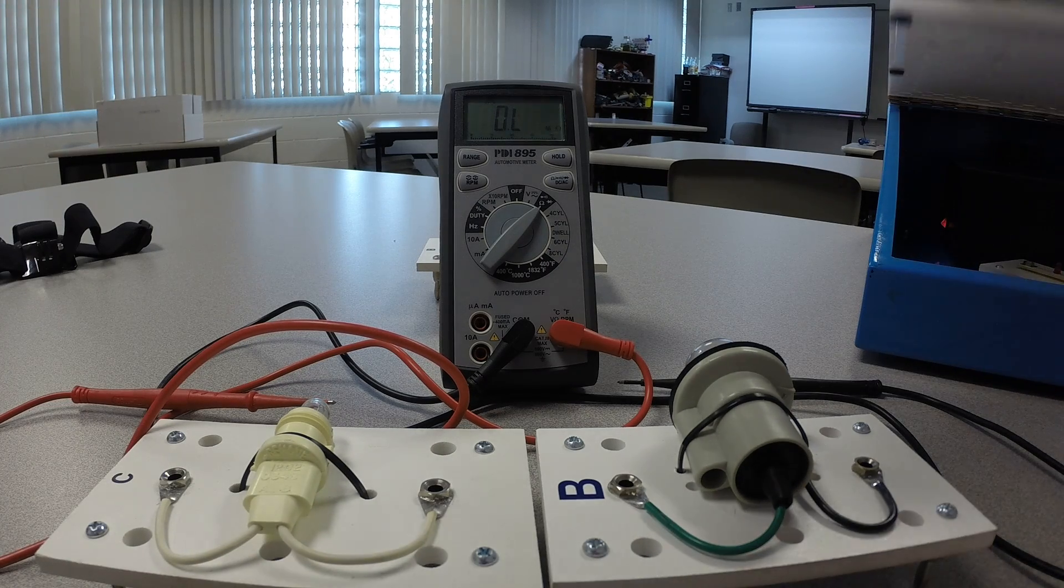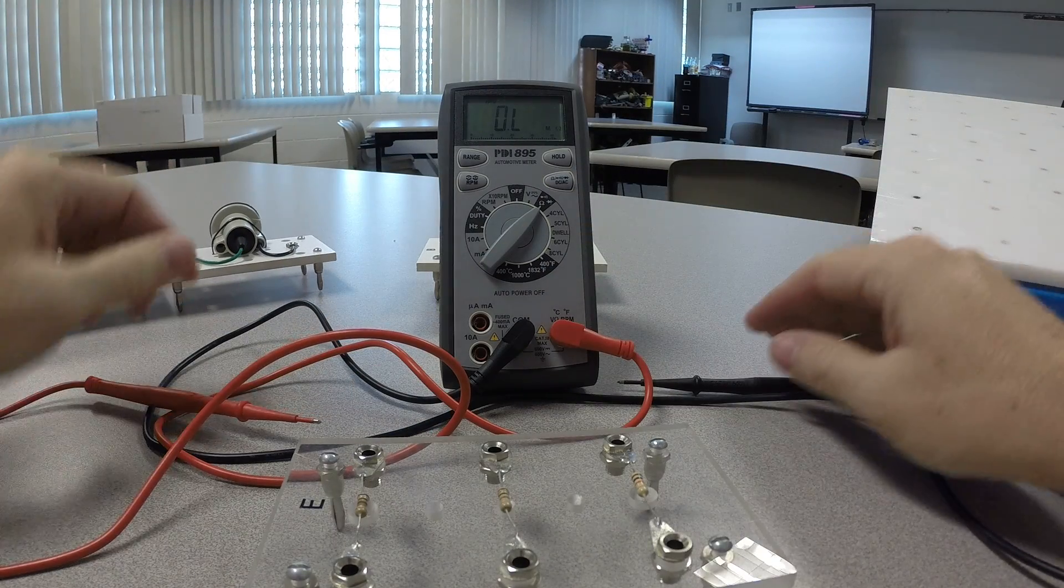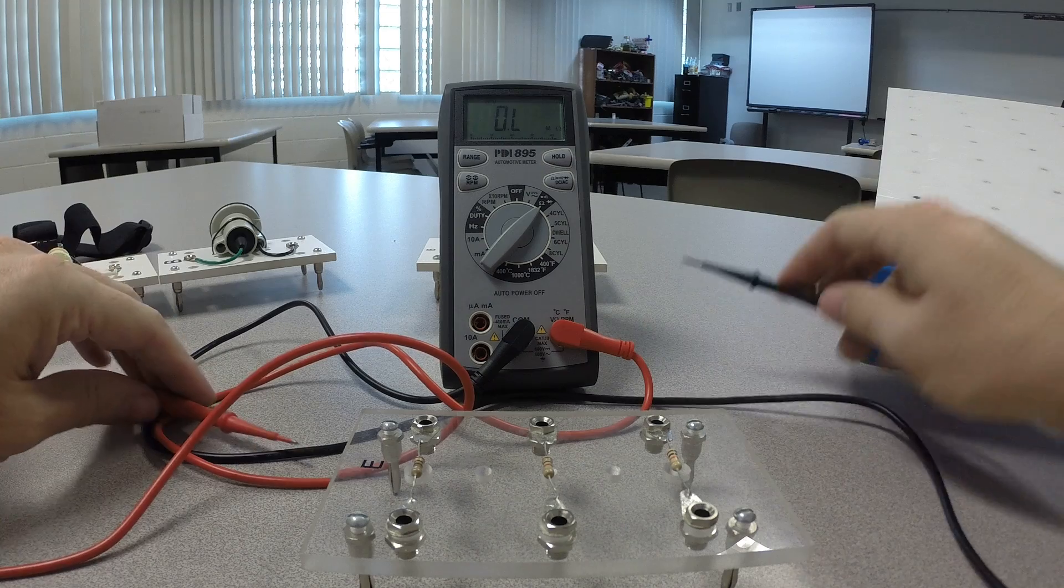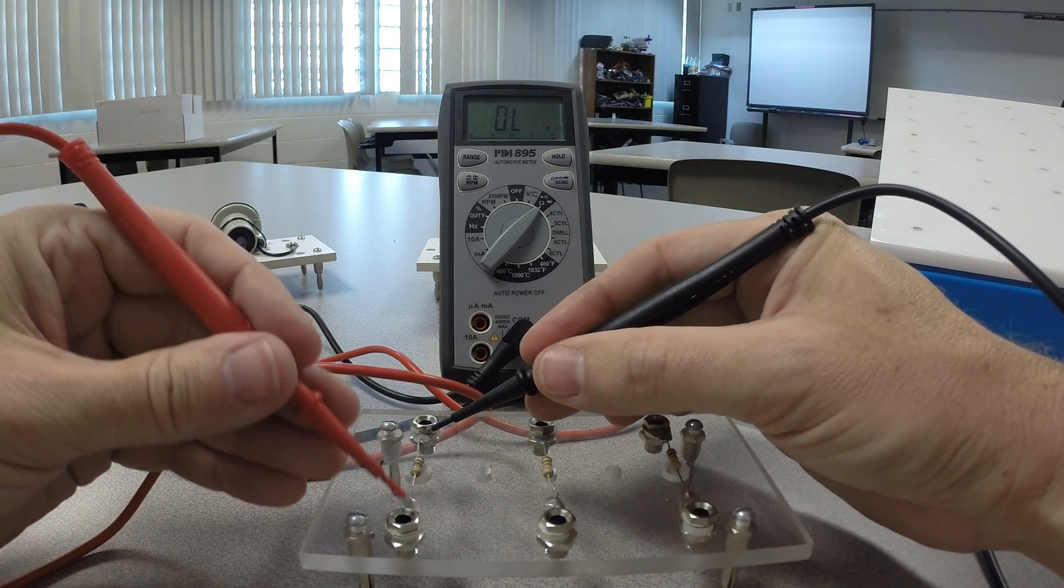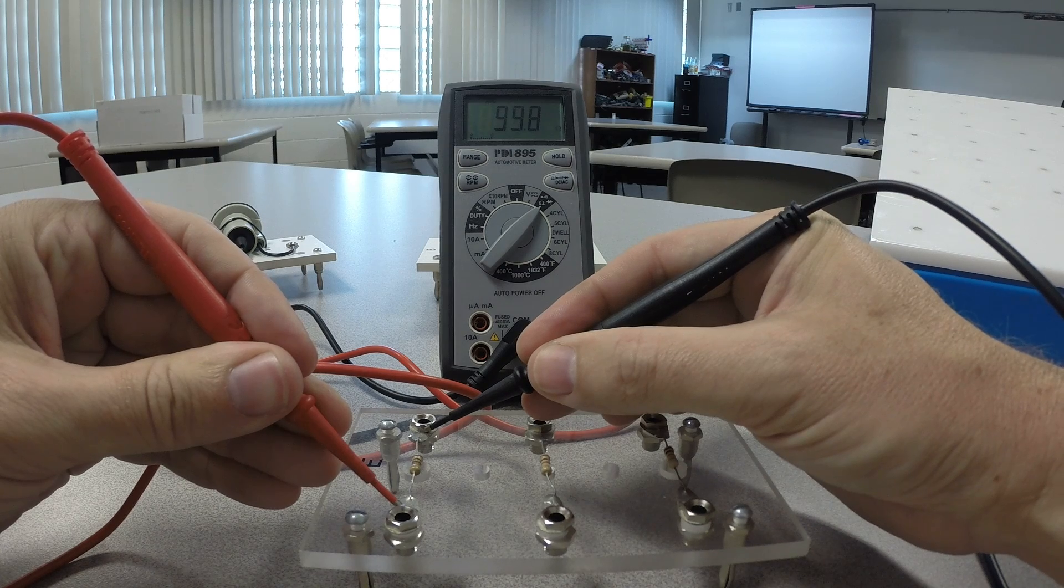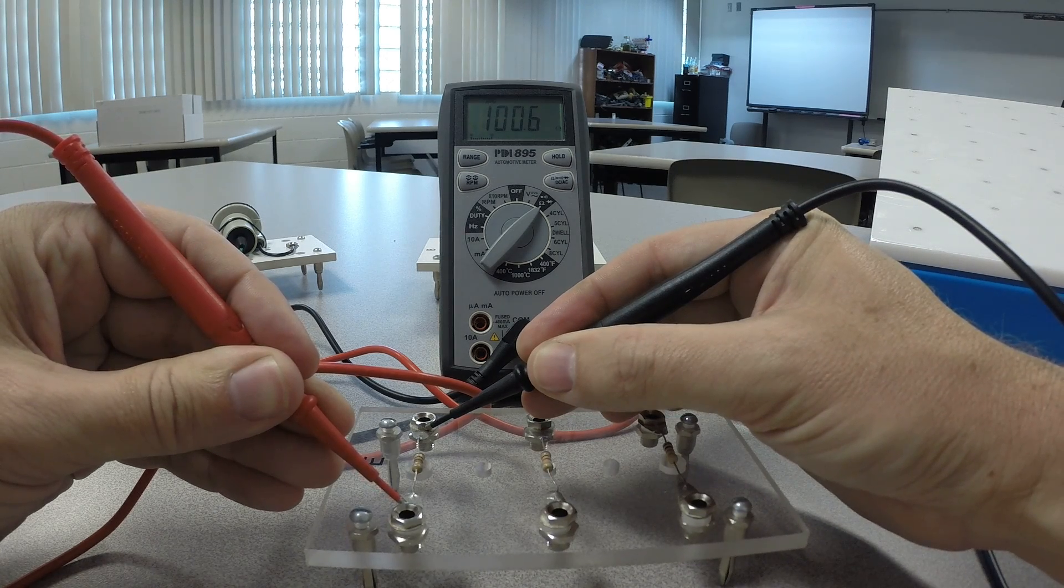Now if we take something different here, let's move our bulbs out of the way. We have some resistors here. And these resistors have varying amounts of resistance. And we can see what that looks like. If we check the first one, about 100 ohms. Pretty straightforward.